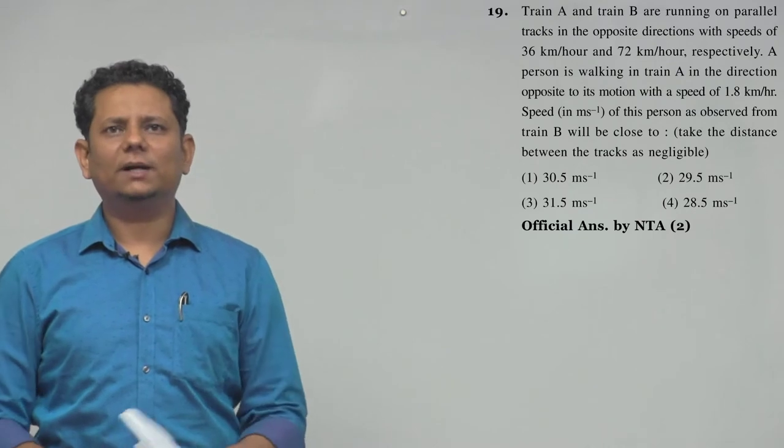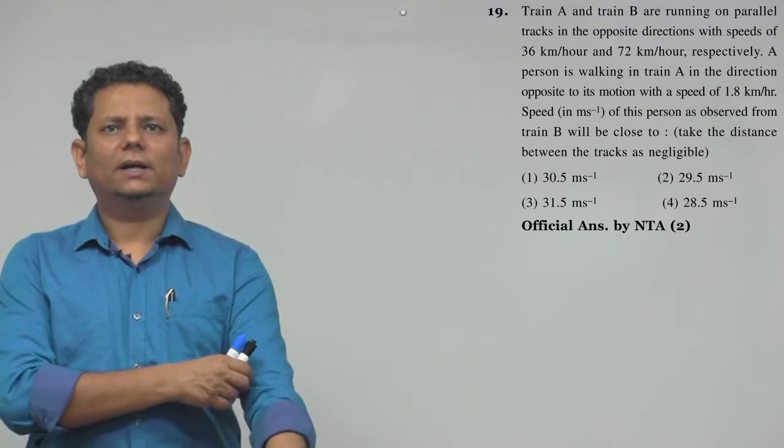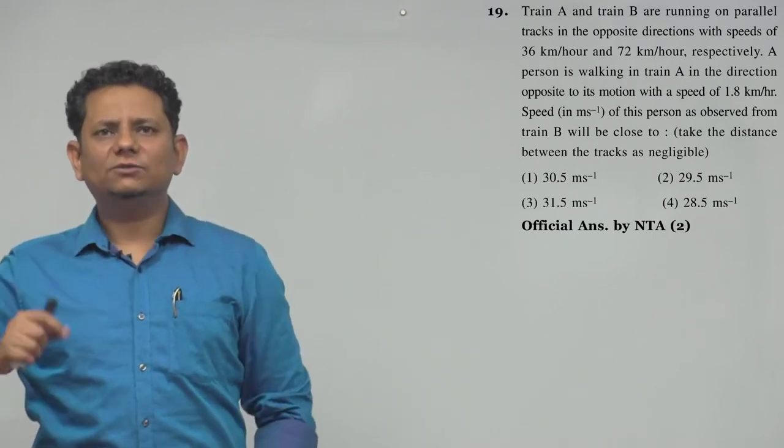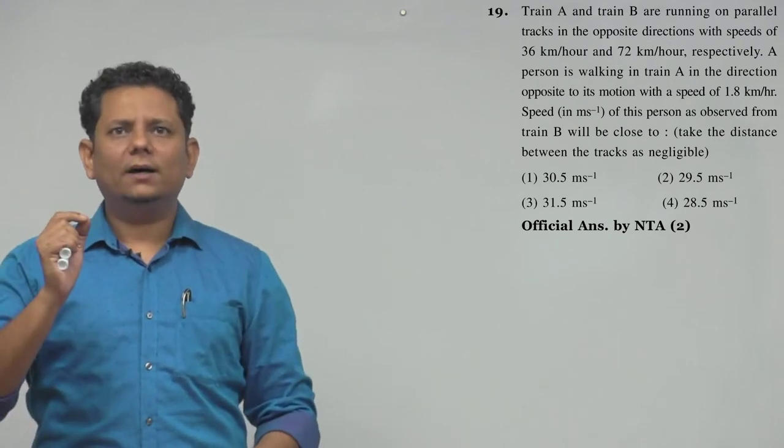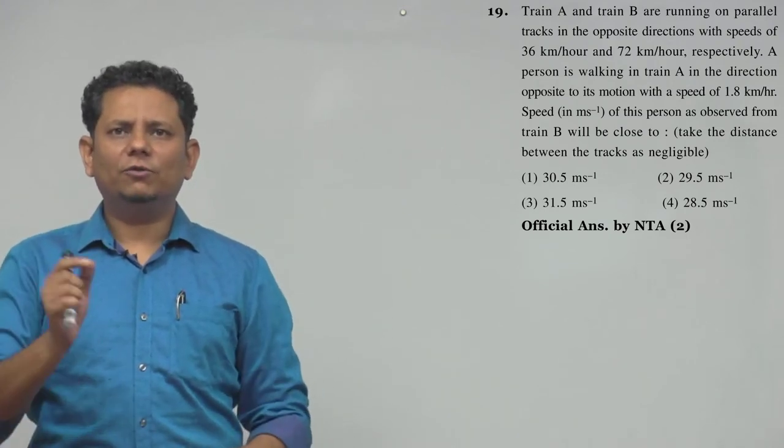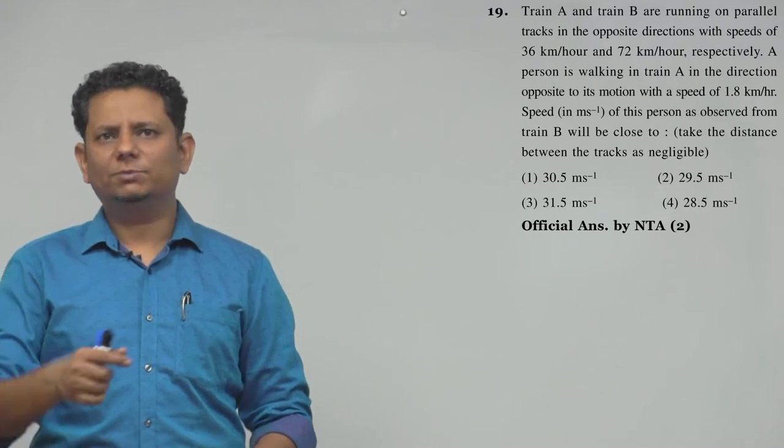Next question. The question says Train A and Train B are running on parallel tracks in the opposite direction with speeds of 36 km per hour and 72 km per hour respectively. A person is walking in train A in the direction opposite to the motion with speed of 1.8 km per hour.